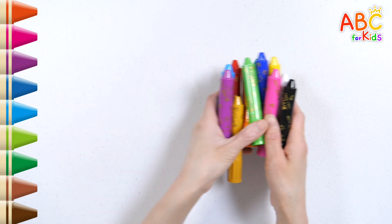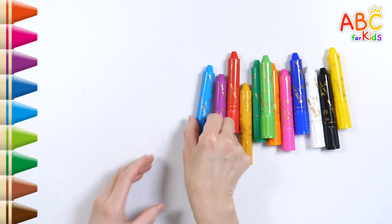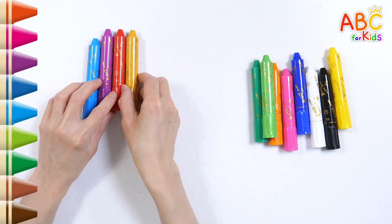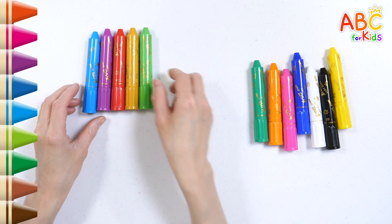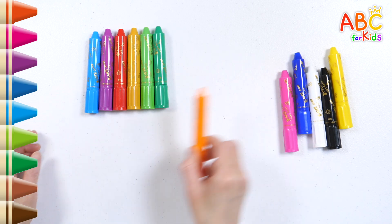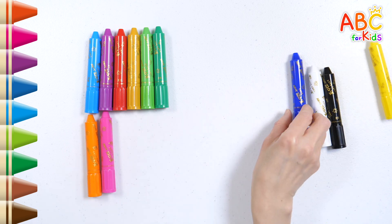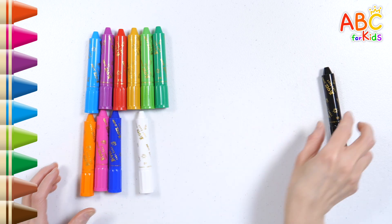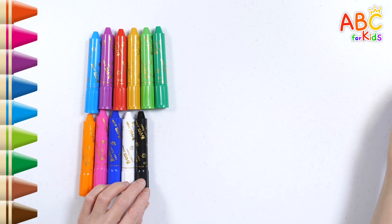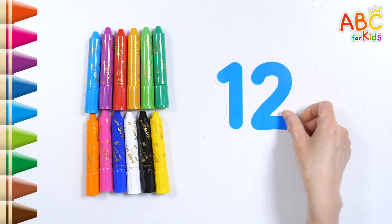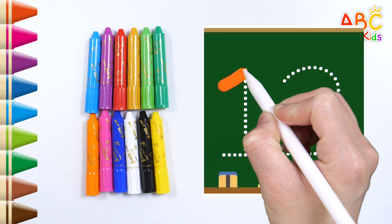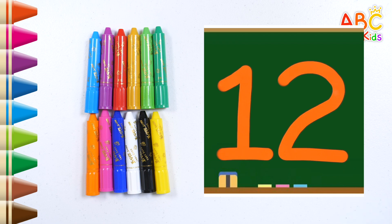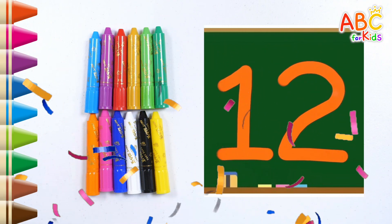It's a crayon. Let's count how many. One, two, three, four, five, six, seven, eight, nine, ten, eleven, twelve. Twelve crayons in all. Let's write the number. Twelve. Great job! Twelve, thirteen, fourteen, fifteen.